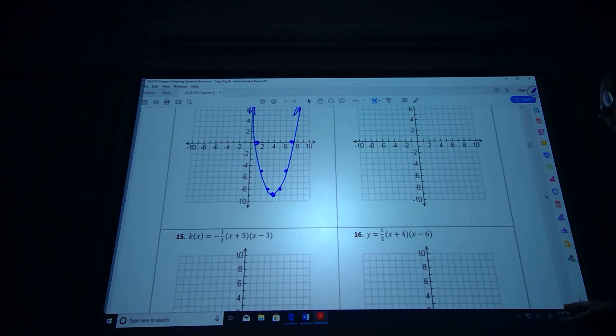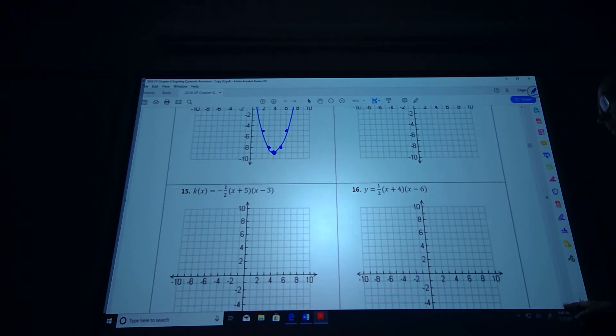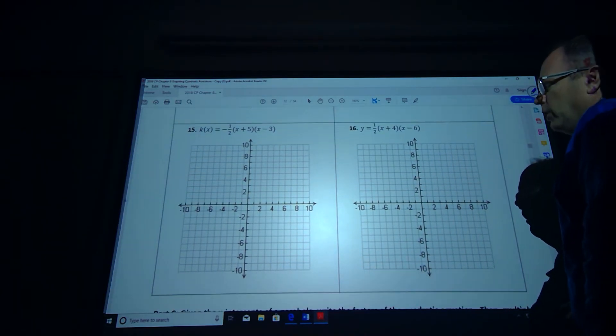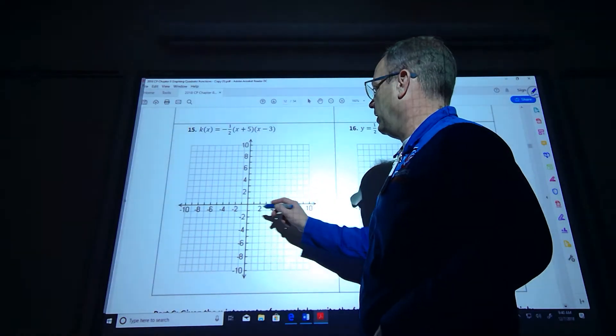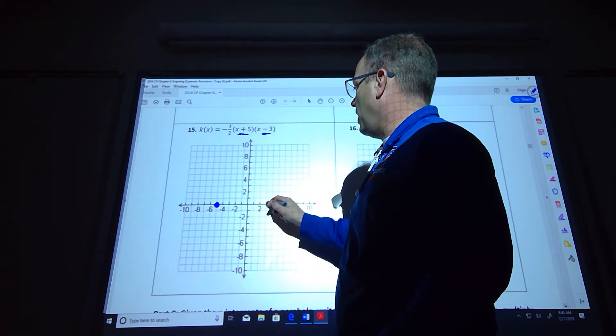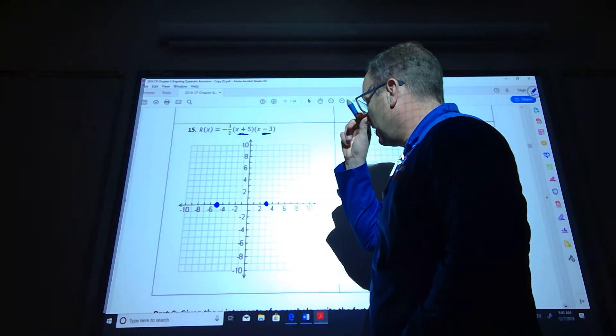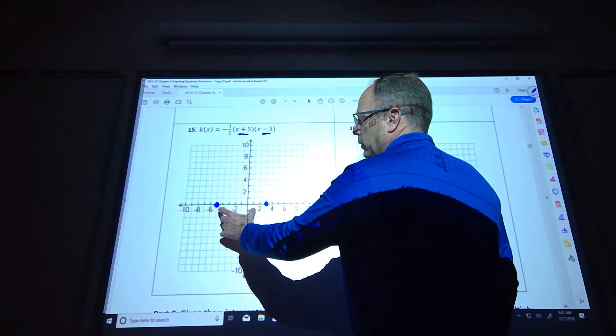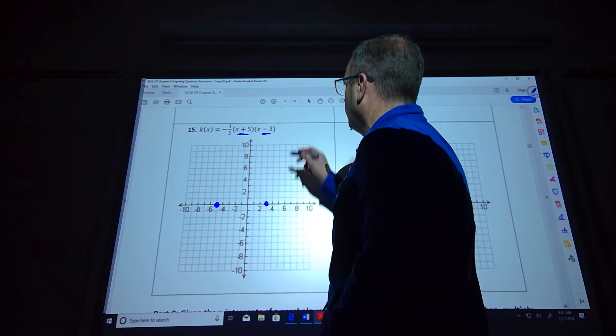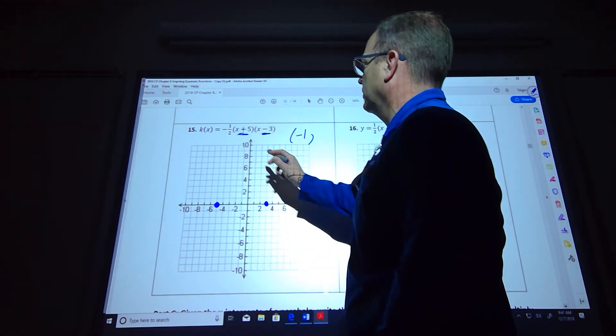Number 15, remember this is one of those fat ones. It's going to open down and it's going to be fatter. It's going to be fatter because of that one half out front. So it's going to cross the x-axis at negative 5, which is right here, because it's the opposite of this, and then opposite of that is positive 3. And so let's figure out halfway in between them. So if we come in 1, come in 1, come in 1, it looks like at negative 1, that's going to be where our vertex takes place.